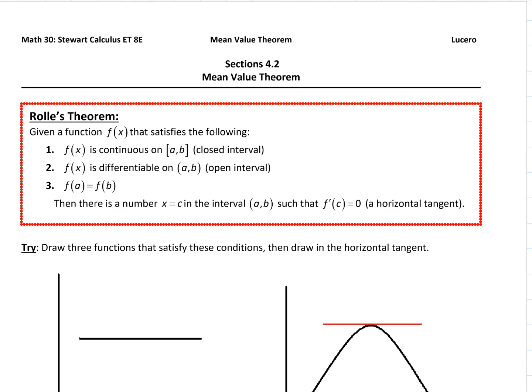The first one is called Rolle's Theorem. Rolle's Theorem says that if we have a function that satisfies the following three conditions: it is continuous on a closed interval from a to b, it is differentiable on the open interval (a, b), and f(a) equals f(b).